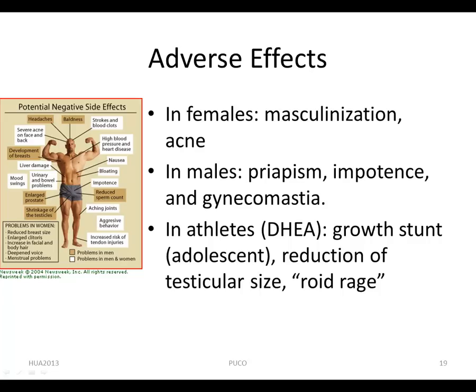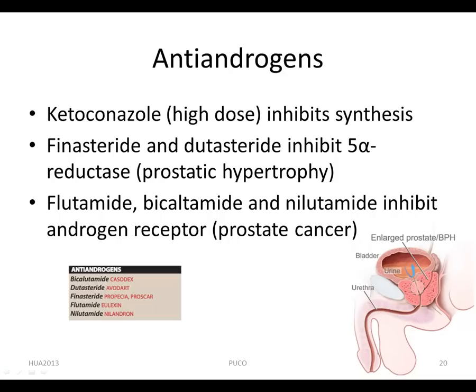Finasteride and dutasteride, agents used for treatment of benign prostatic hypertrophy, inhibit 5-alpha reductase. The resulting decreased formation of dihydrotestosterone (DHT) in the prostate leads to a reduction in prostate size. Antiandrogens such as flutamide act as competitive inhibitors of androgen at the target cells.